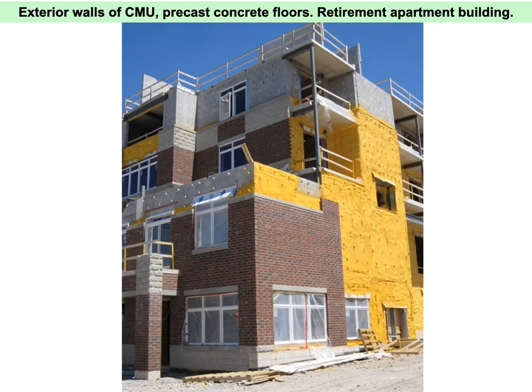This is a high-performance retirement home in Waterloo where CMU is the load-bearing part of the structure and also the exterior enclosure support. Air, water, vapor, and thermal control are provided by spray polyurethane foam, and brick is used as cladding on the outside. This is definitely a high-performance system that should perform well over the next 30 to 60 years without much in the way of upgrades or maintenance, other than the windows.